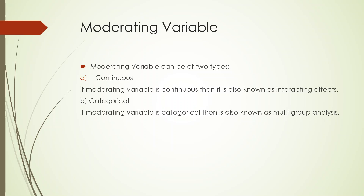A moderating variable can be of two types: continuous and categorical. If the moderating variable is continuous, we are introducing what is known as the interaction effect. When we are introducing it as categorical, it is known as multi-group analysis.